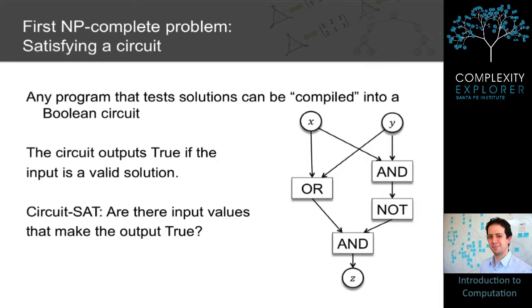So you have some problem in NP, meaning there's a polynomial time algorithm that can verify a potential answer to the problem. You take that polynomial time algorithm and compile it into a Boolean circuit. This circuit has the property that it outputs true if and only if the input to the circuit is a valid solution to the original problem.